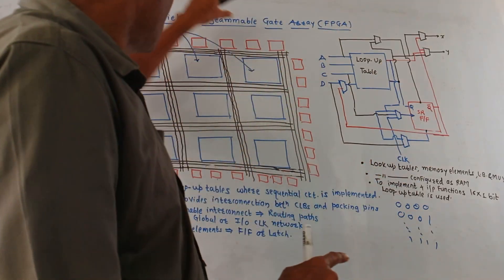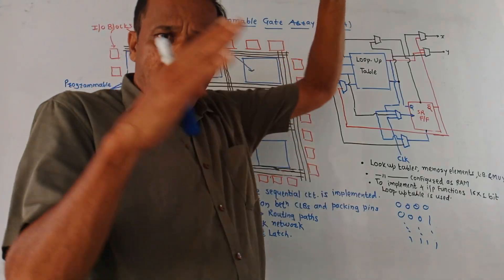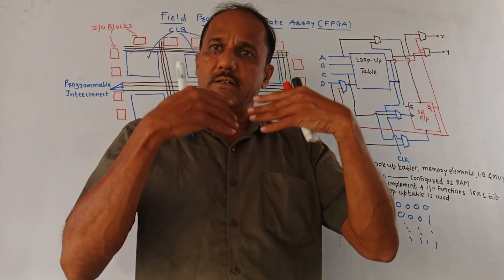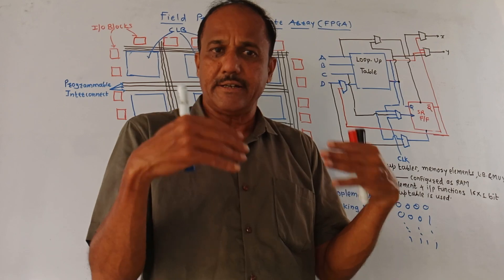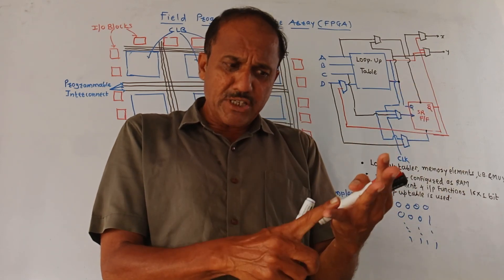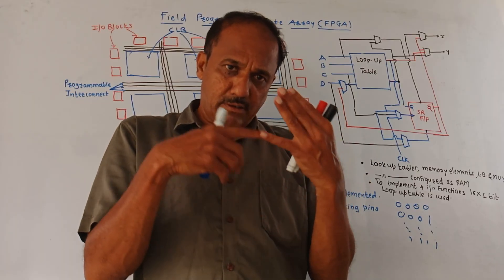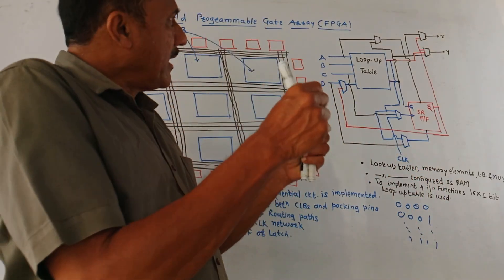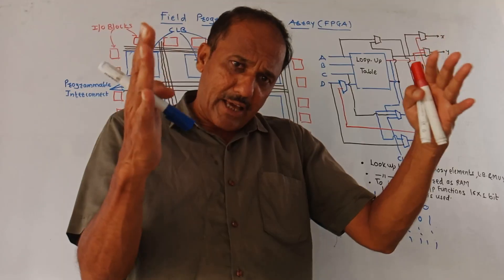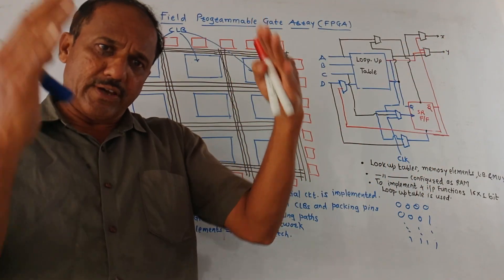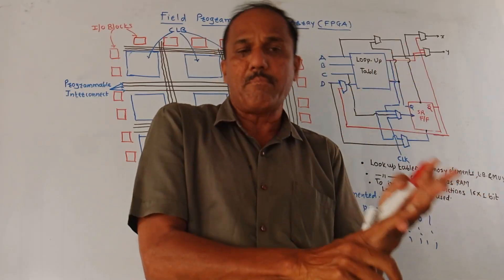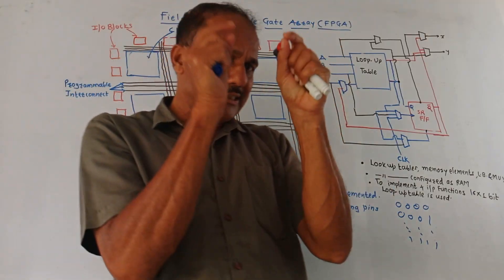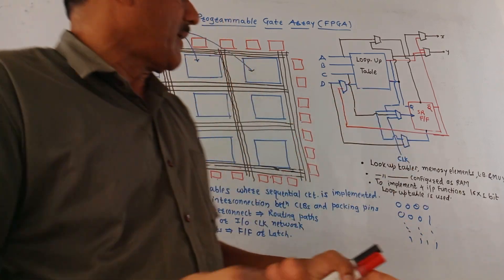FPGA is Field Programmable Gate Array. There are certain differences between CPLD and FPGA as far as the architecture and specifications are concerned, which we are going to study in detail later. Presently, FPGA is applicable compared to CPLD — it is applicable for designing complicated circuitries. It can be reprogrammed. Custom integrated circuits were having certain drawbacks. These drawbacks are overcome by making use of FPGA because you can implement larger logical circuitry on a single chip and it can be reprogrammed.